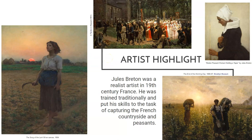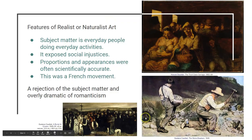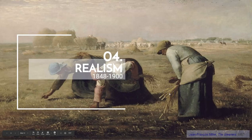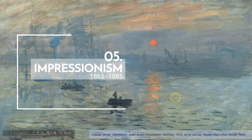One artist I really like from the period is Jules Breton. He was a realist artist in 19th century France, traditionally trained, but he put his skills to painting French peasants instead of royalty. The three main artists of the realist movement are Henri Daumier, Gustave Courbet, and Jean-François Millet — the three most popular for the movement.